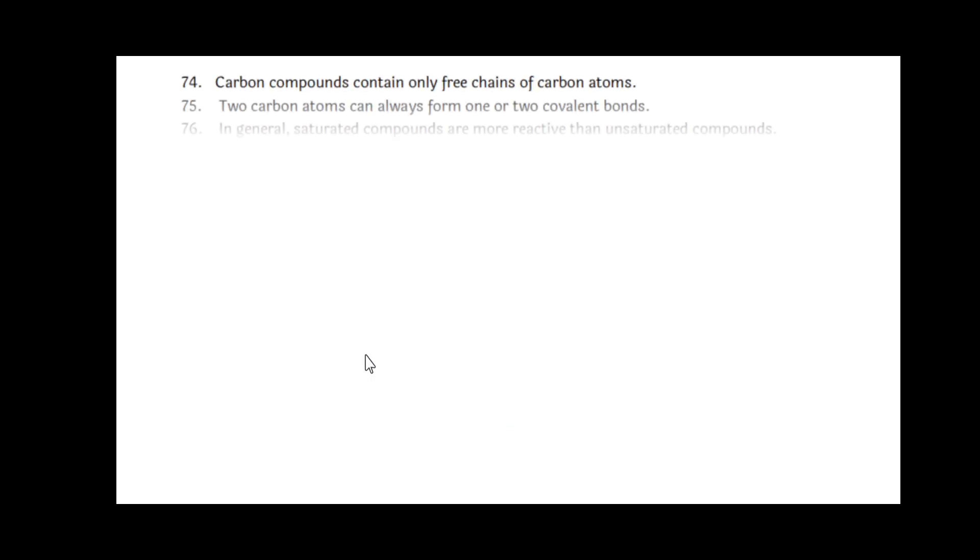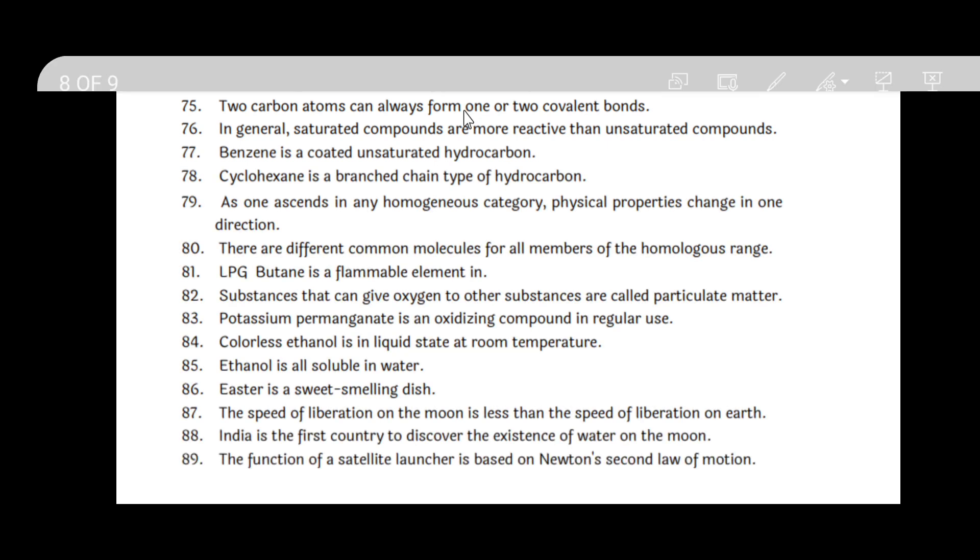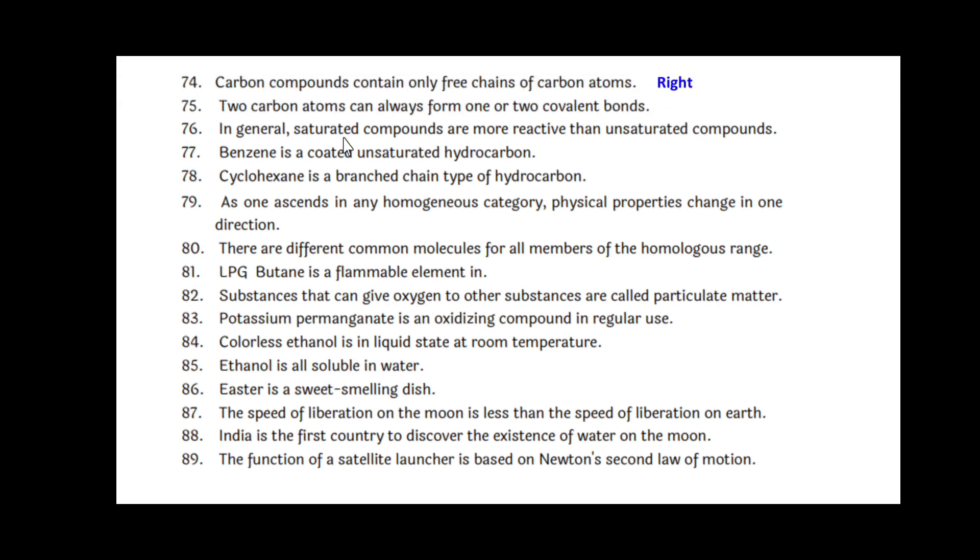Carbon compounds contain only free chains of carbon atoms. That is right. Two carbon atoms can always form one or two covalent bonds. Right. In general, saturated compounds are more reactive than unsaturated compounds. Wrong. Benzene is a saturated hydrocarbon. Right. Cyclohexane is a branched chain type of hydrocarbon. That is wrong. As one ascends in any homogenous category, physical properties change in one direction. That is right.